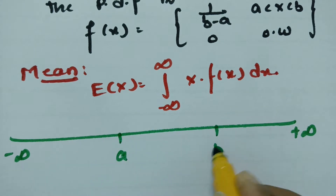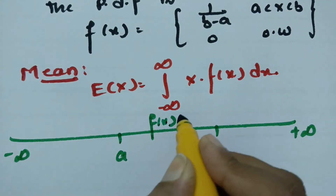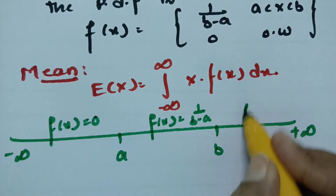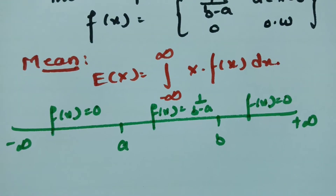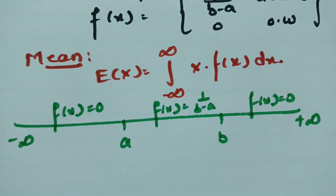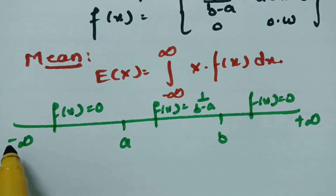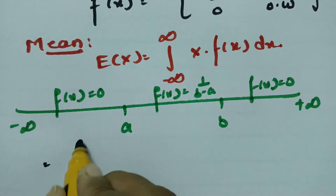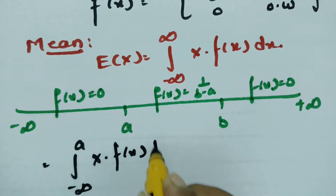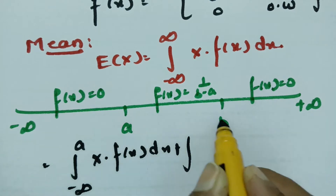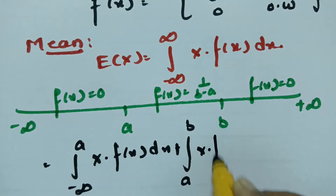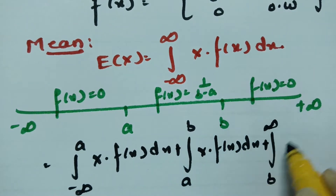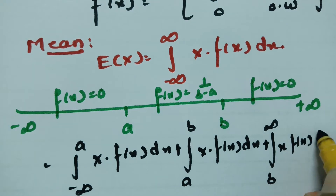In between a and b, f(x) is equal to 1/(b − a), and in all other cases f(x) = 0. So I split this into three parts: integral from minus infinity to a of x·f(x) dx, plus integral from a to b of x·f(x) dx, plus integral from b to plus infinity of x·f(x) dx.